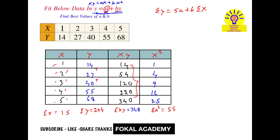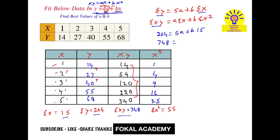Apply summation to this equation. It becomes: summation of xy equals a into summation of x, plus b into summation of x-square. Now substitute all the values — sigma x, sigma y, sigma xy, sigma x-square — into these two equations. We get: 204 equals 5a plus 15b, and 748 equals 15a plus 55b.